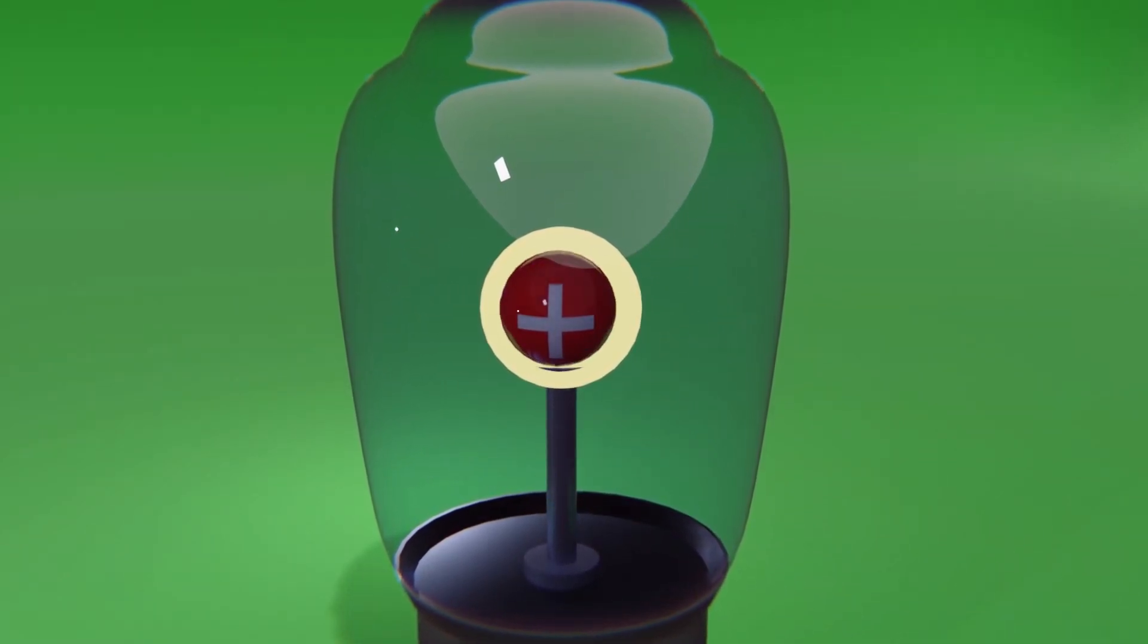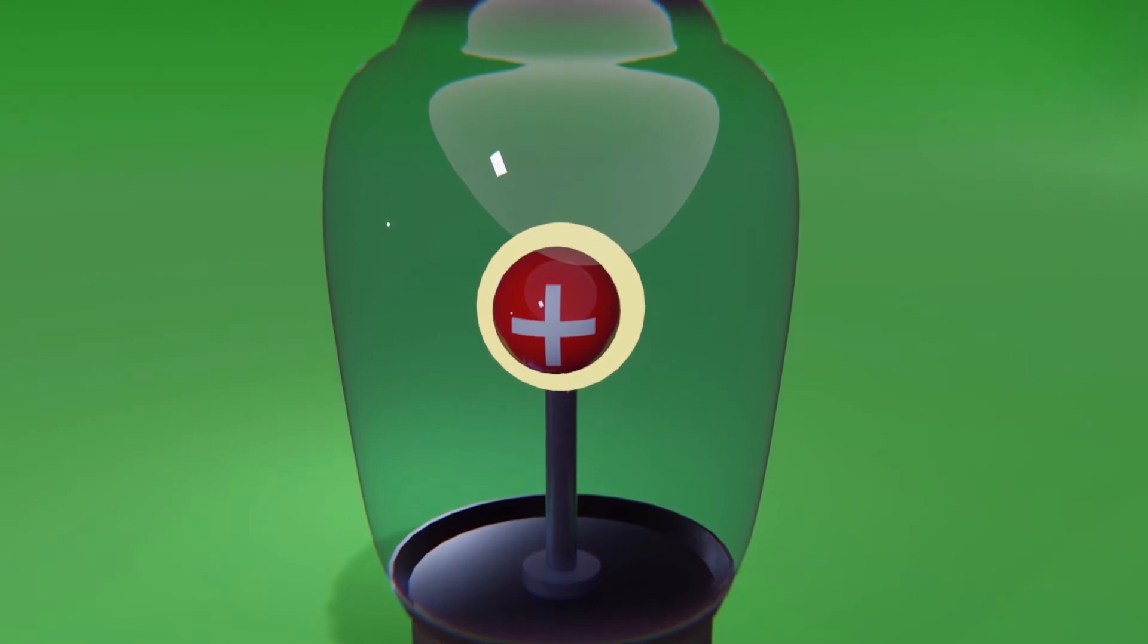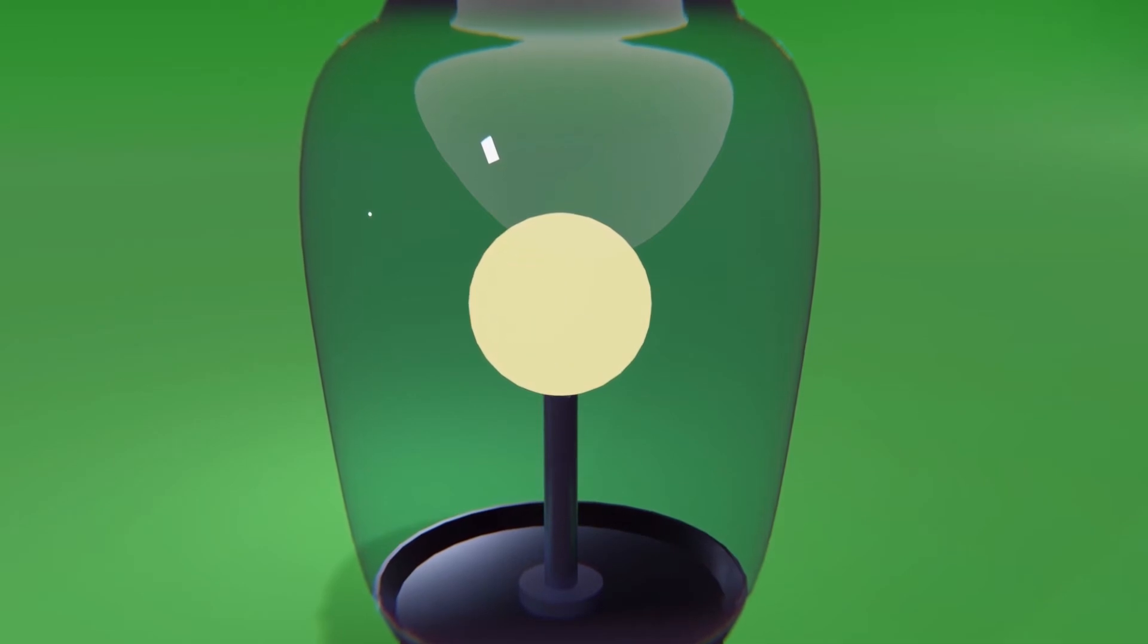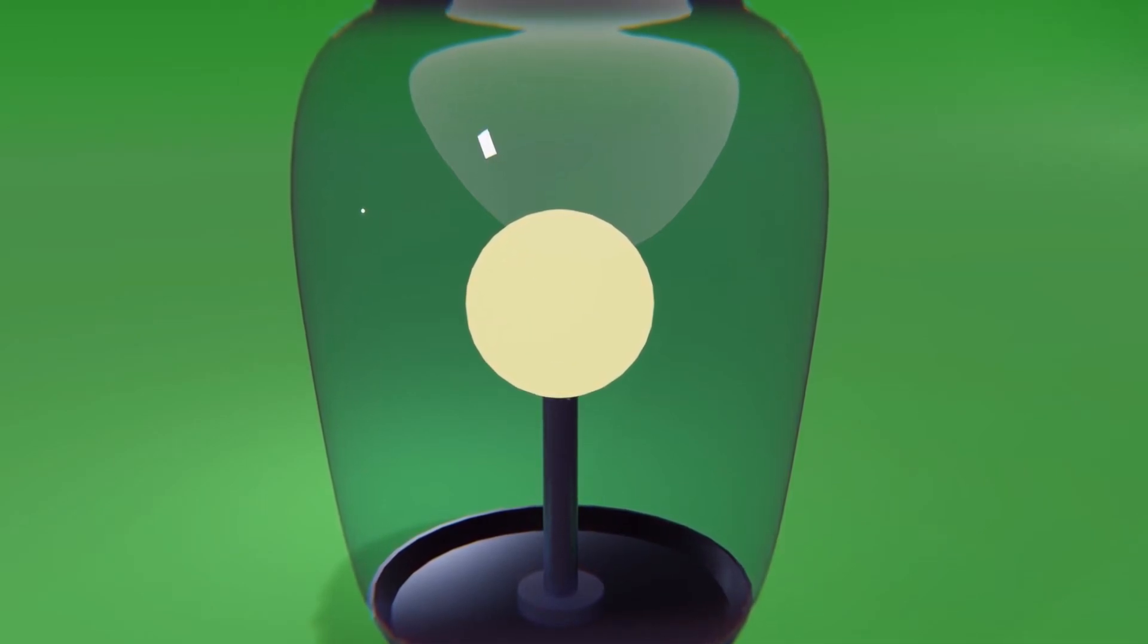whereas in the opposite case, when heating a sphere with a positive charge, no variation occurred. This behavior is known today as thermionic emission.